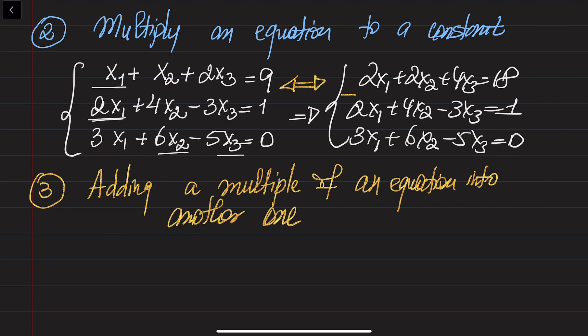What we did in the second operation is multiply one of the equations by a constant. What I wanted to do is eliminate x1. In order to do this, I need to multiply an equation by a constant and then subtract the second from the first. But I could combine these two operations at once by multiplying one equation by a constant and adding it to another.